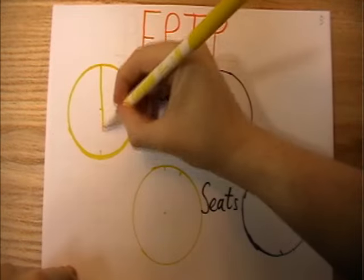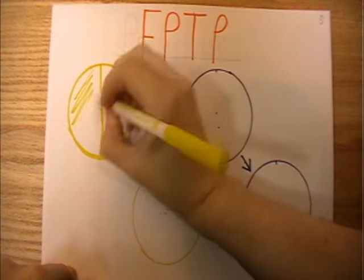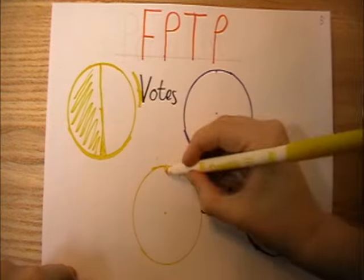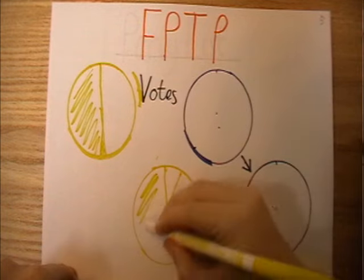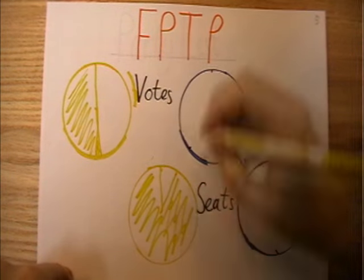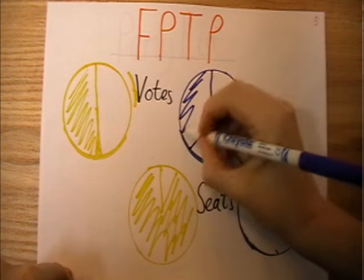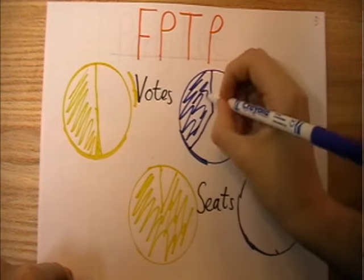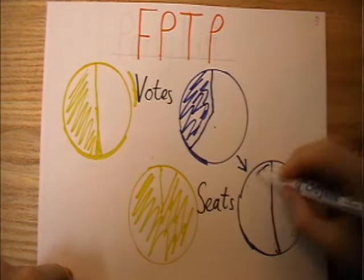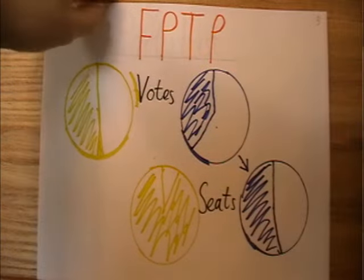Everyone else gets nothing. The big advantage of this system is that it produces a clear local representative. The big disadvantage is that it doesn't necessarily represent the views of the country proportionally. Most recently in 2015, the SNP won 94% of the seats in Scotland with only 50% of the vote, and in the UK as a whole the Conservatives won 51% of the seats with only 37% of the vote.